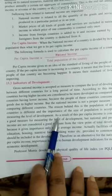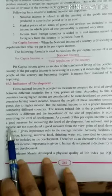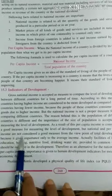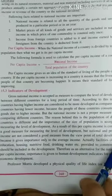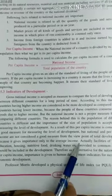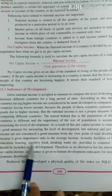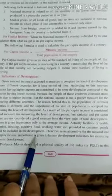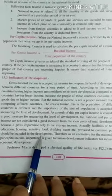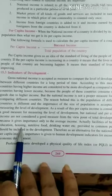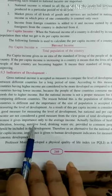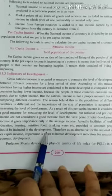As a result, per capita income is considered a better measure for measuring the level of development. But national and per capita income are also not considered a complete measure from the viewpoint of total development, because they give importance only to average income. Actually, facilities of health, education, housing, nutritive food, drinking water, etc. provided to common people should also be included in development. Economists say इन सब चीजों को ध्यान में रखकर किसी country को developed और developing कहना चाहिए.